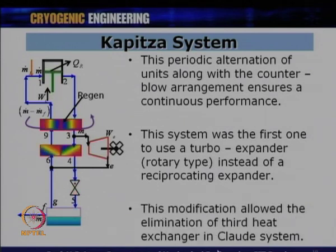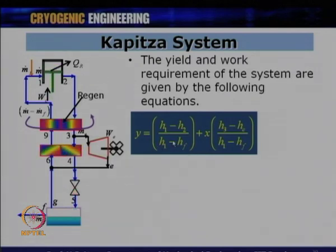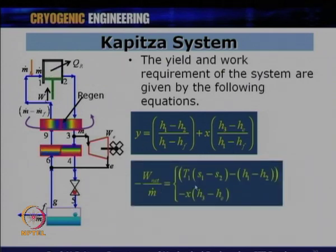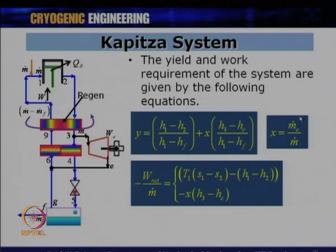The yield and work requirement equations for the Kapitza system are mathematically the same as for the Claude cycle: Y = (H1 - H2)/(H1 - H_F) + X·(H3 - H_E)/(H1 - H_F), and W_net similarly includes the compressor work minus the work recovered from the turbo expander (X times the enthalpy drop across it). The equations are unchanged because the fundamental thermodynamic relationships remain the same despite the hardware modifications.